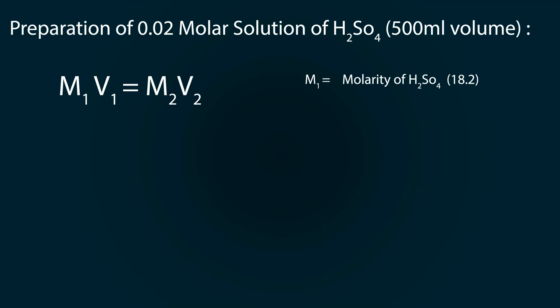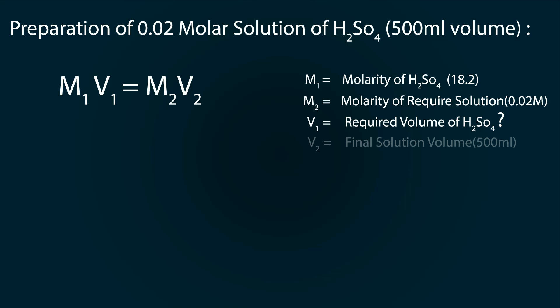Here, M1 is the molarity of sulfuric acid which we calculated as 18.2. M2 is the molarity of the required solution, which is 0.02 molar. V1 is the required volume of H2SO4 that we have to pipette out during our process, and V2 is our final solution volume, which we have fixed to 500 milliliters.